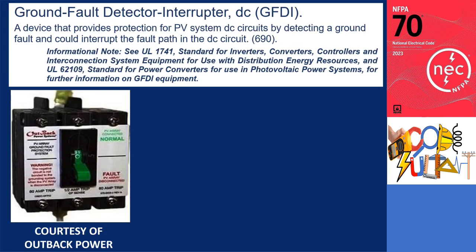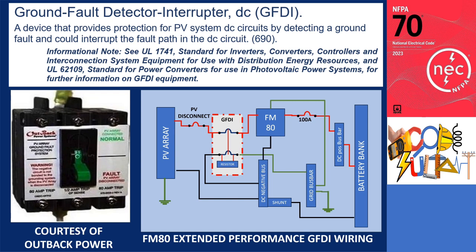Ground Fault Detector Interrupter (DC-GFDI) is a device that provides protection for PV system DC circuits by detecting a ground fault and can interrupt the fault path in the DC circuit. The Ground Fault Detector Interrupter is a safety device for a photovoltaic array. If the array becomes shorted to ground, it disconnects the PV system from the batteries. The photo shows a GFDI device. In the illustration, the ADA-GFDI is moved to the input with an additional disconnecting means and 100A circuit breakers on the output to reduce nuisance tripping. This photo and illustration are courtesy of Outback Power.